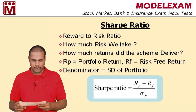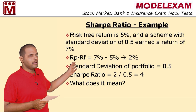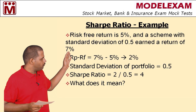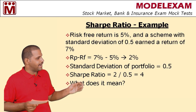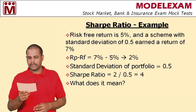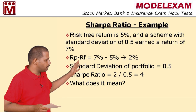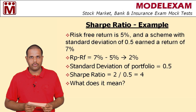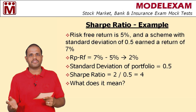Let us start with an example. See the case study here. Risk free return is 5%, standard deviation is 0.5, and the scheme return is 7%. So what is the Sharpe Ratio, and what can we infer from this case study?